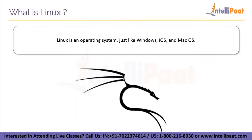Linux is an operating system just like Windows, iOS, or Mac OS. In reality, the Linux operating system powers one of the most popular platforms on the globe — Android. An operating system is a piece of software that controls all of the hardware resources on your computer or laptop. Simply put, the operating system is in charge of coordinating the connection between your program and your hardware. The software on your laptop would not work without the operating system.